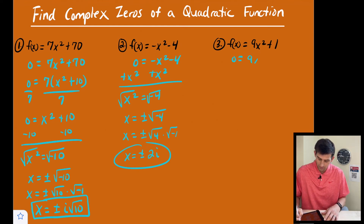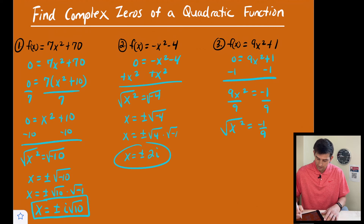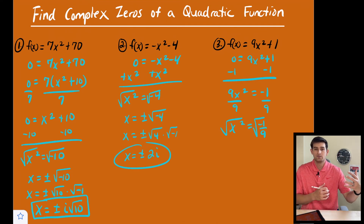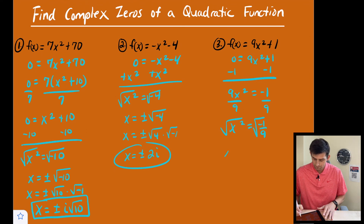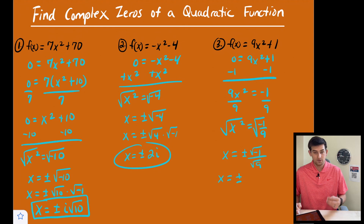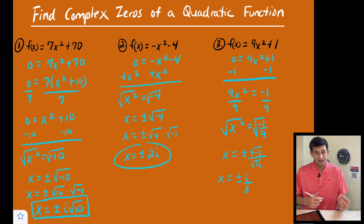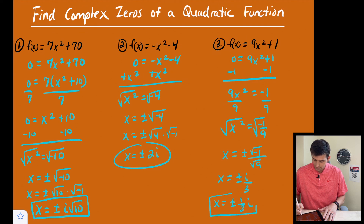For our last one, we write zero equals 9x squared plus one. Subtract one from both sides: 9x squared equals negative one. Divide by nine, so x squared equals negative one over nine. Take the square root of both sides — when we take the square root of a fraction, we take the square root of the top and the square root of the bottom. So x equals positive or negative square root of negative one over the square root of nine. Square root of negative one is i and the square root of nine is three, so we get positive or negative i over three, which you can also write as positive or negative one third i — they both mean the same thing.